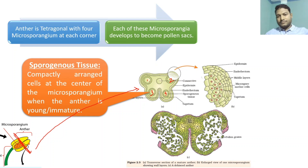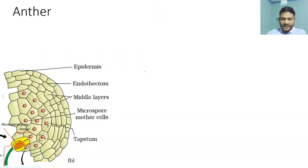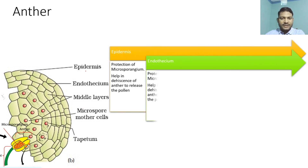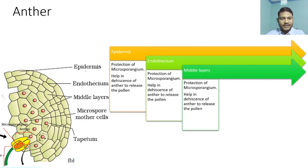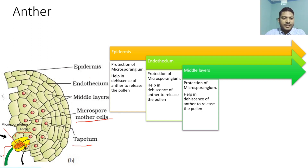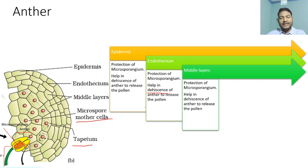What are the different layers of the wall? At the beginning we have the epidermis — the outermost layer. Next to that we have the endothecium. Then we have the middle layers, typically two to three layers. And then you have the microspore mother cell. Finally, you have the tapetum. The epidermis, endothecium, and middle layers are the three outer layers. Their function is to protect the microsporangium and the microspore mother cell, and they help in dehiscence of the anther once it is matured.